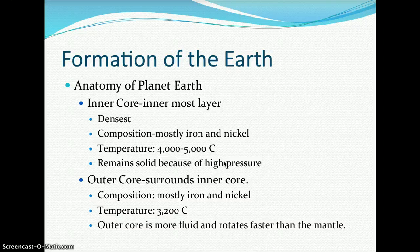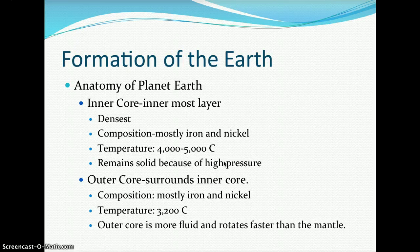Looking at the anatomy of planet Earth: the inner core is the innermost layer. It is the densest, with a composition mostly of iron and nickel. It has a temperature between 4,000 and 5,000 degrees Celsius and remains solid because of high pressure. Surrounding the inner core is the outer core, composed mostly of nickel and iron, at about 3,200 degrees Celsius. The outer core is more fluid because it rotates faster than the mantle, surrounding the solid inner core.